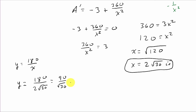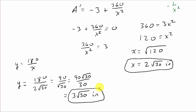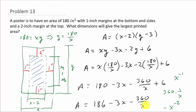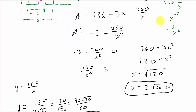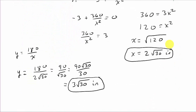Rationalizing the denominator: 90 times square root of 30 over 30, which simplifies to 3 square roots of 30 inches. So the dimensions of the poster that give the largest printed area are x equals 2√30 inches and y equals 3√30 inches. I hope that helped — give me a like, share, and subscribe. Thanks for watching.